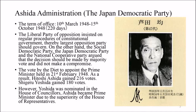The Liberal Party, as the largest opposition party, insisted on regular procedures of constitutional government and argued they should govern. On the other hand, the Social Democratic Party, the Japan Democratic Party, and the National Cooperative Party argued that the decision should be made by majority vote and did not compromise. The vote by the Diet to appoint the Prime Minister was held on 21st February 1948.